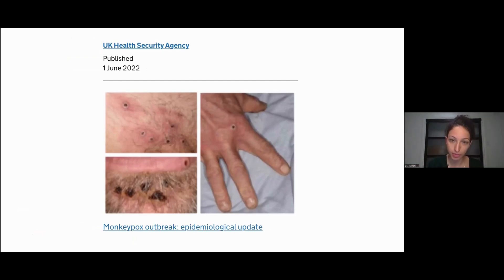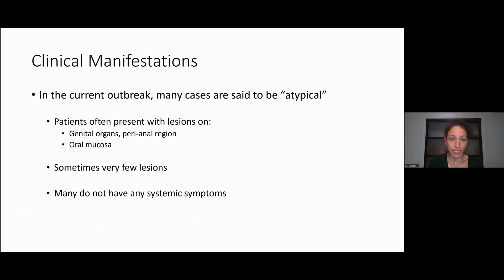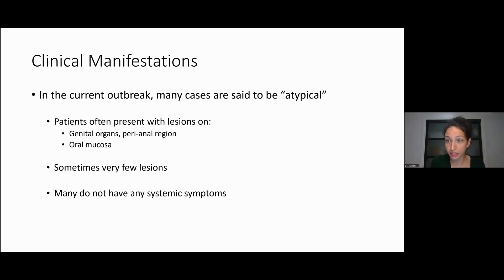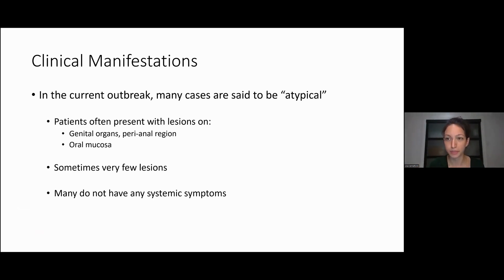These are from the UK — pictures of the ulcerated and crusting phases. In our current outbreak, the cases are atypical — in quotation marks — because I don't think we're really familiar with what's typical. This is new to us, but if you look at the literature from endemic regions, there are many more mild cases. Even in old literature from the seventies, there were totally asymptomatic cases. It's atypical to us because we aren't seeing the full-blown picture we're used to, but this is probably not that atypical for monkeypox.